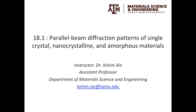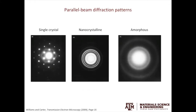Towards the end of the video, we will also touch upon double diffraction and precession electron diffraction. You have seen this slide before: for single crystals, the diffraction patterns are spots; for nanocrystalline materials, the diffraction patterns are sharp rings; and for amorphous materials, the diffraction patterns are diffuse rings. Let's look at them one by one.